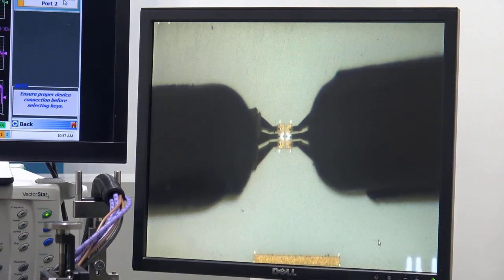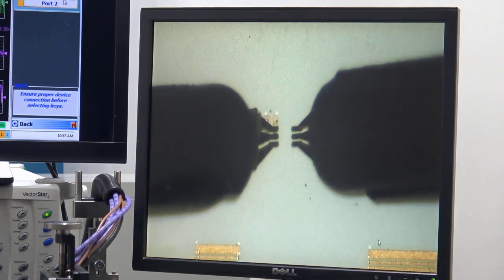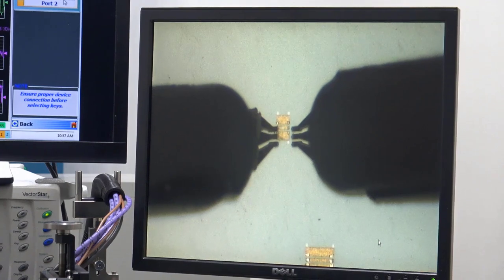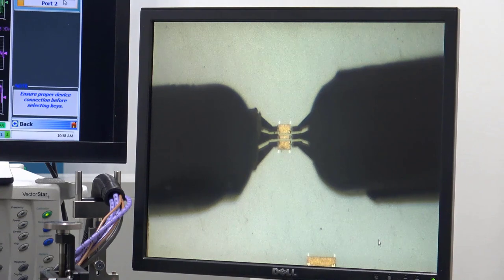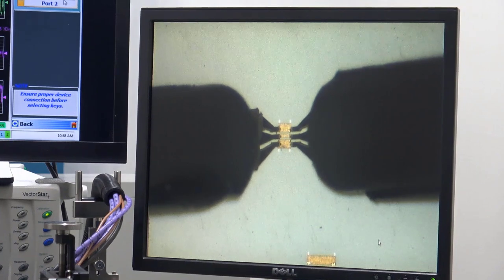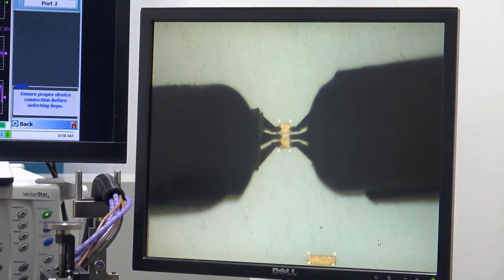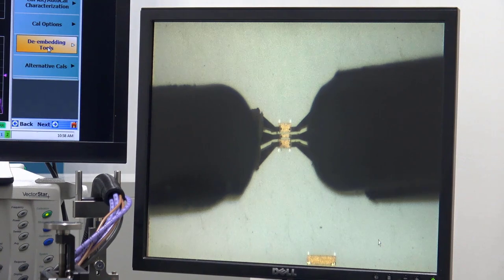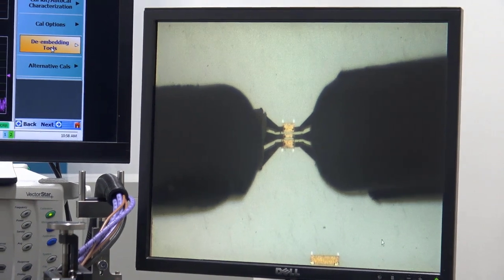Lift our probes and now go to our line. Touch down on our line, make that measurement. And now we can click done and start evaluation of our calibration.